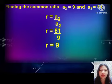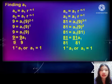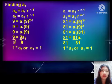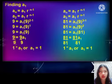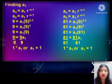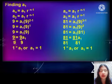Since we have the common ratio which is 9, let's find a sub 1. We will use the formula for finding a sub 1 — first write the formula: a sub n equals a sub 1 multiplied by r, the common ratio, raised to n minus 1, where n is the term position.